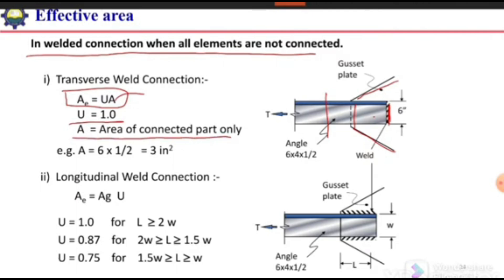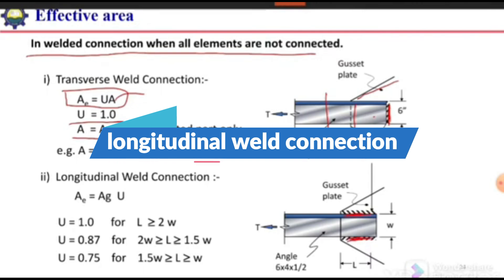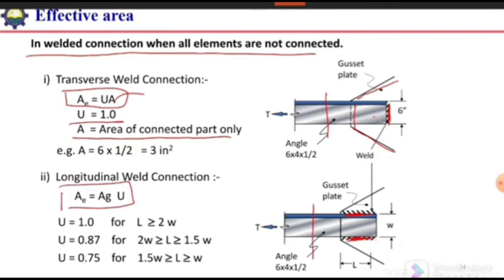If the angle section is connected with longitudinal welds, then AE equals gross area of the angle times U. Here, U equals 1 when the weld length L is greater than 2W (where W is the distance between the two welds). If L is between 1.5W and 2W, then U equals 0.87. And if L is between 1W and 1.5W, then U equals 0.75.